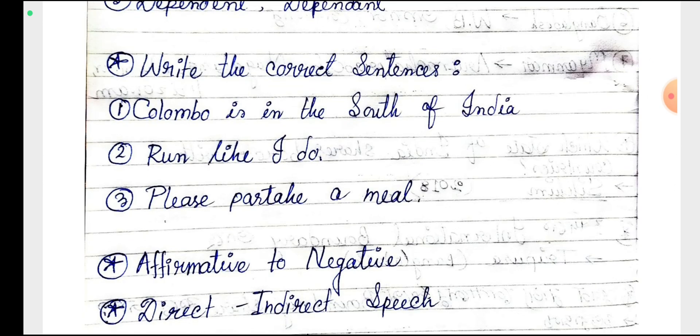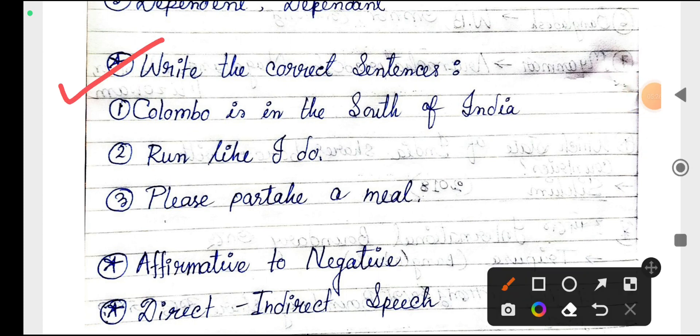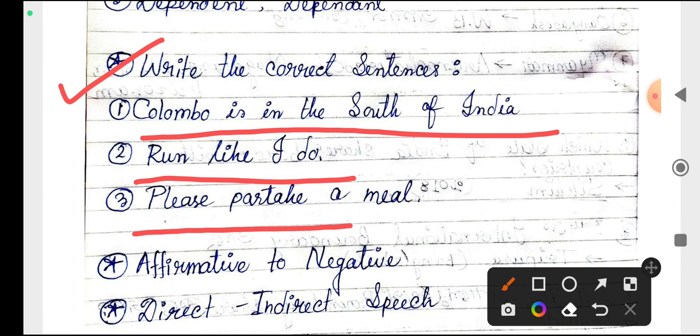Next, write the correct sentences. Colombo is in the south of India. Run like I do. Please partake a meal. If there is any mistake or error here, you have to rectify it and write the correction.